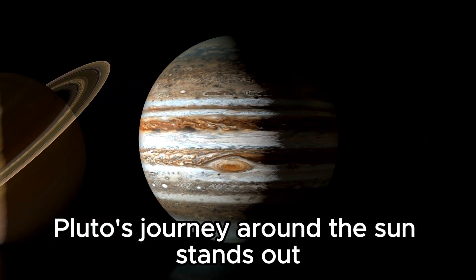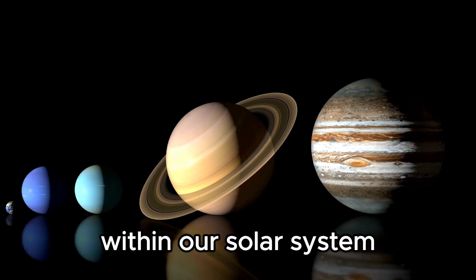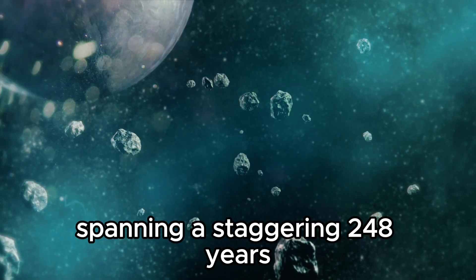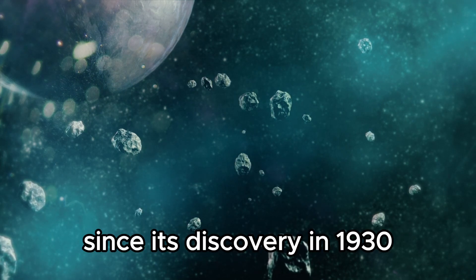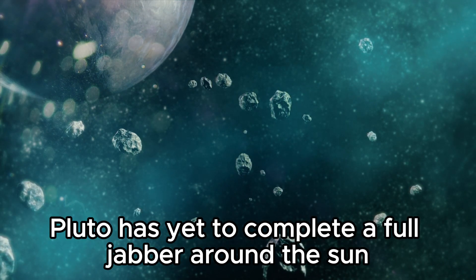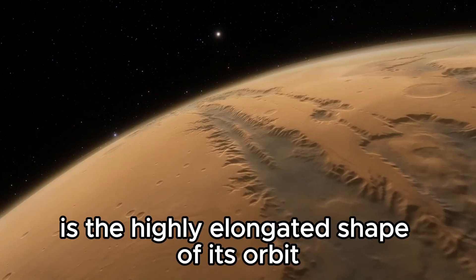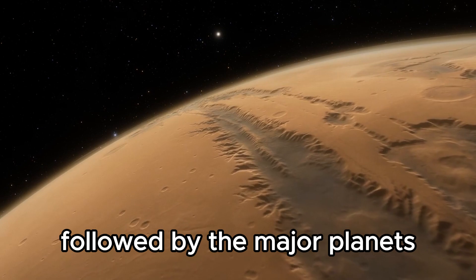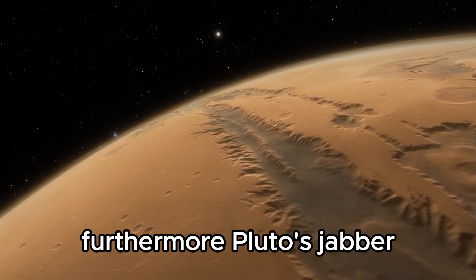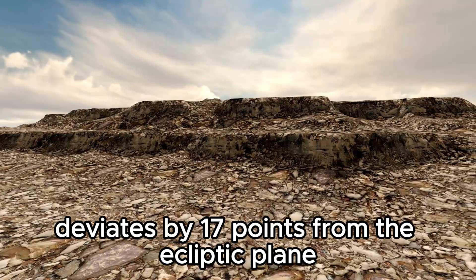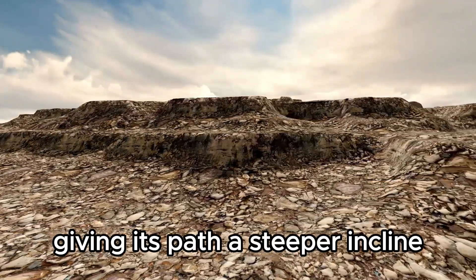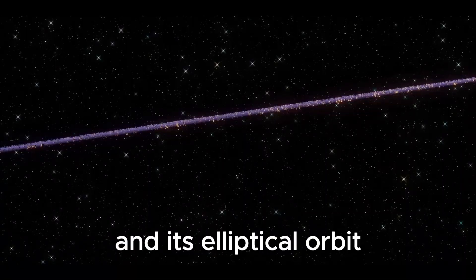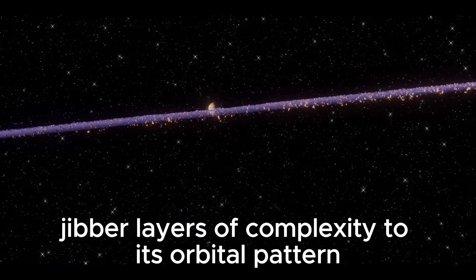Pluto's journey around the Sun stands out due to its unique characteristics within our solar system. Its orbit is exceptionally lengthy, spanning a staggering 248 years. Since its discovery in 1930, Pluto has yet to complete a full orbit around the Sun. Adding to its mystique is the highly elongated shape of its orbit, a departure from the more circular paths followed by the major planets. Furthermore, Pluto's orbit deviates by 17 degrees from the ecliptic plane, giving its path a steeper incline compared to other planets. The combination of Pluto's inclination and its elliptical orbit adds layers of complexity to its orbital pattern.